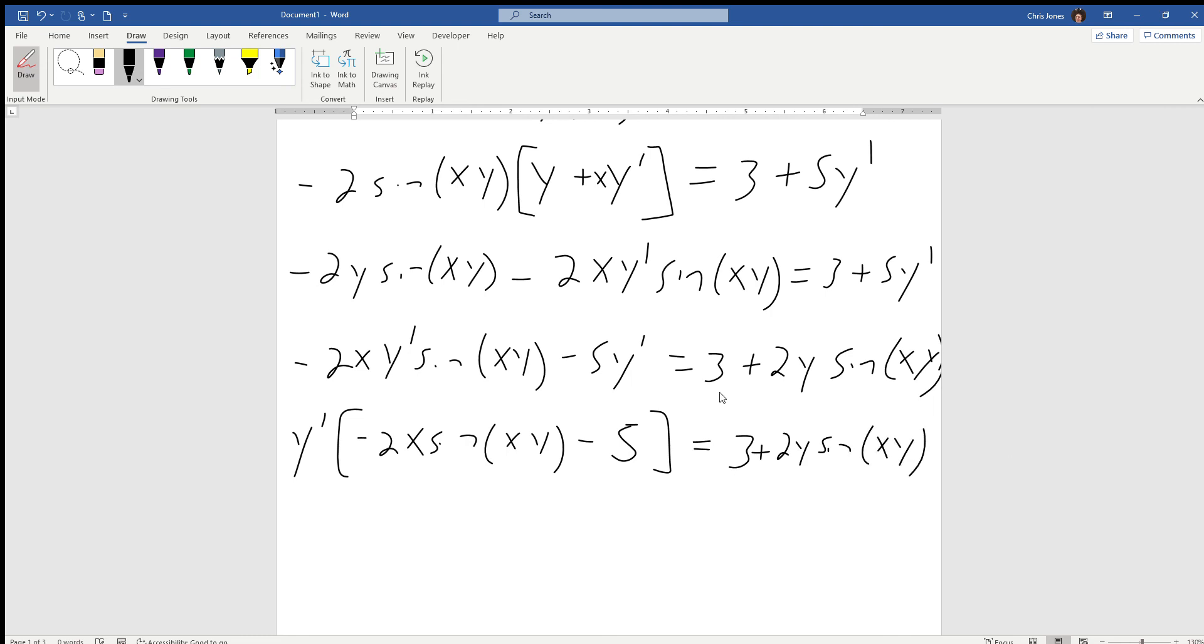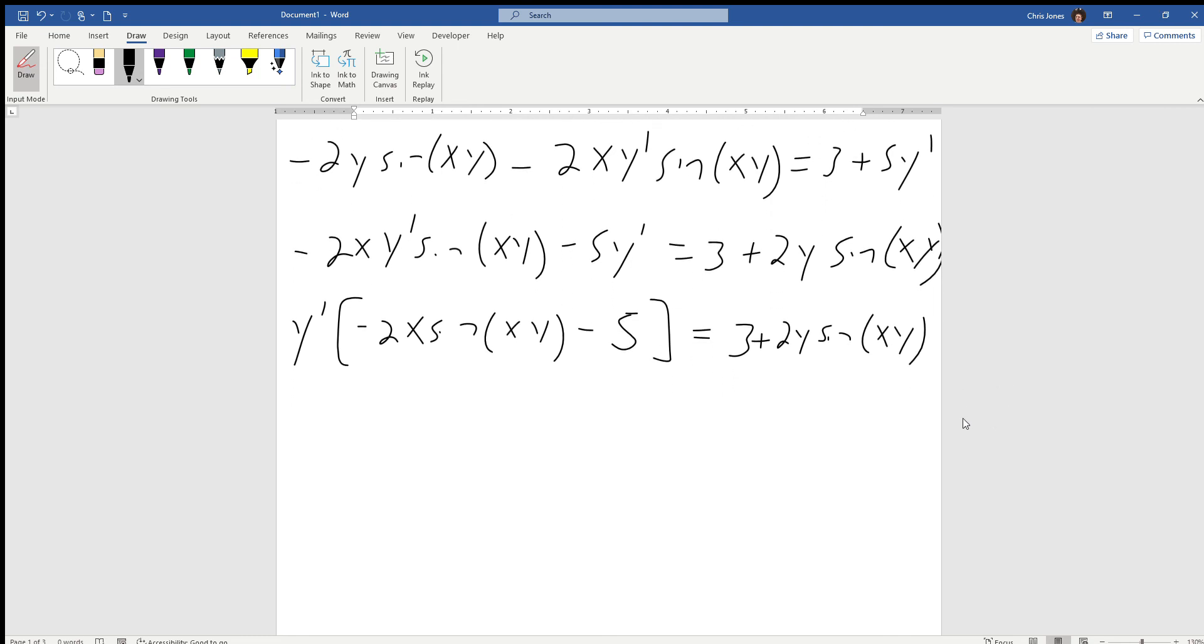Finally, we can divide everything by negative 2x sine xy minus 5. We can write it two ways – I'm going to factor the negative out. We get 3 plus 2y sine xy in the numerator, and then the denominator 2x sine xy plus 5.